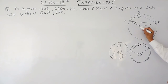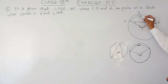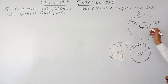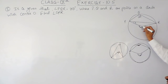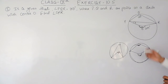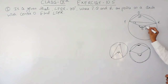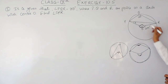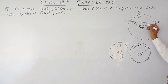So this angle at the center will be twice of the inscribed angle, meaning its value will be equal to 200 degrees. Now we know that the complete angle at a point is 360 degrees and the value of this angle is 200 degrees. So the reflex angle will be equal to 360 degrees minus 200 degrees, that is 160 degrees.